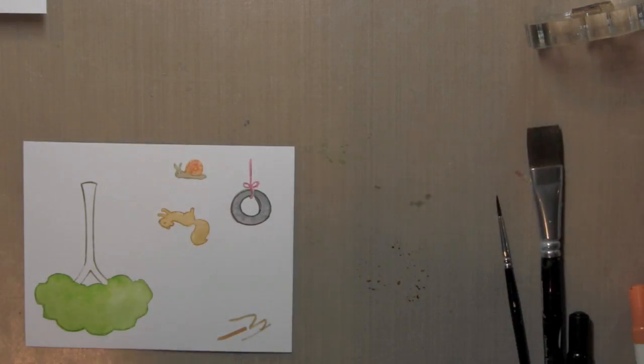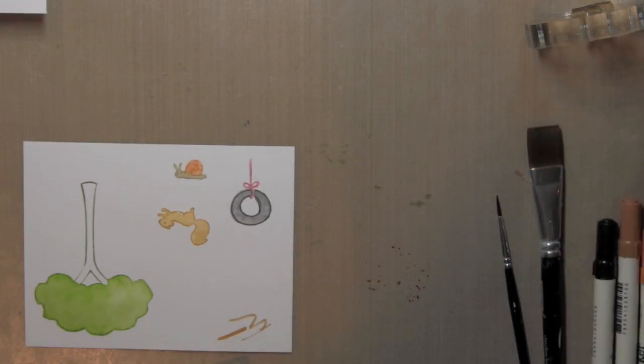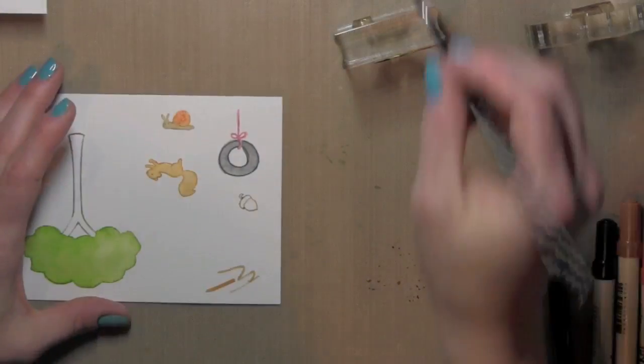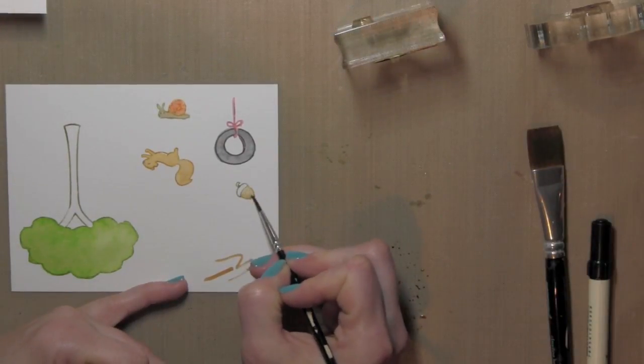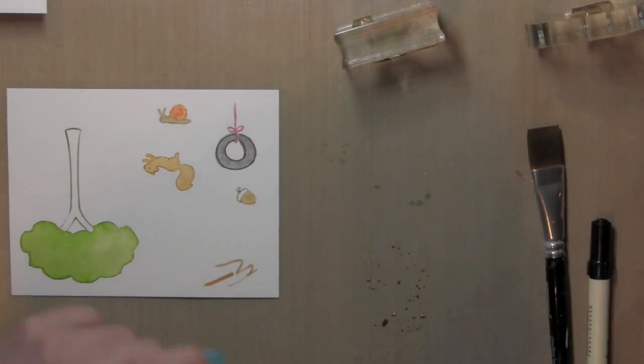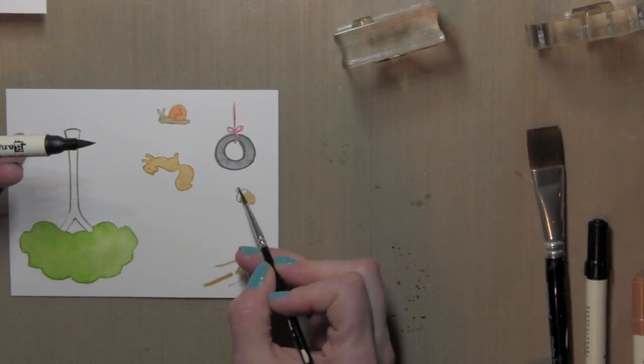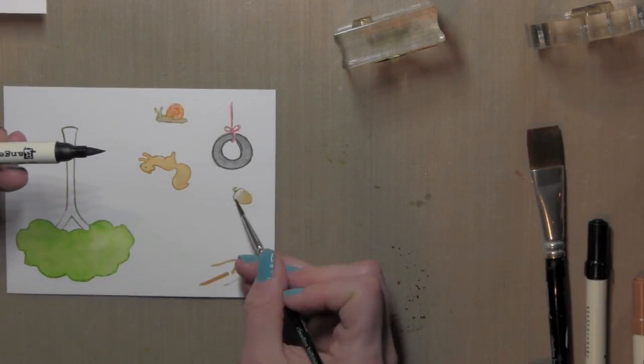When working with distress inks and watercoloring with them, you just want to make sure that you work in such a way that you let certain parts of your project dry before you move on, if that makes sense. That way you don't run the risk of having them run and drip, or maybe blend where you don't want them to, and things like that.